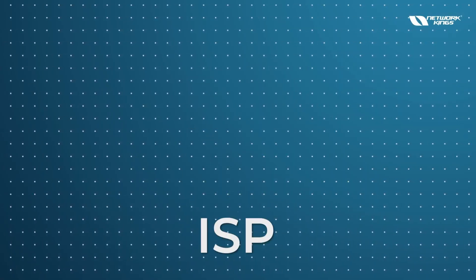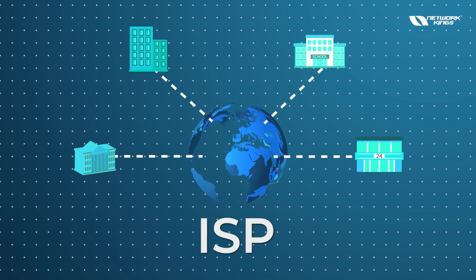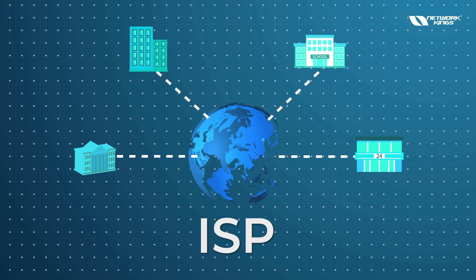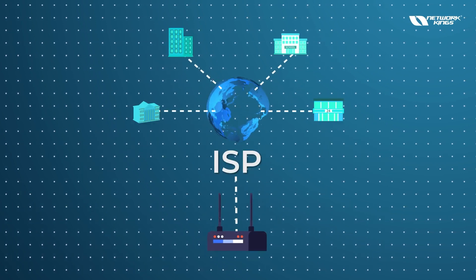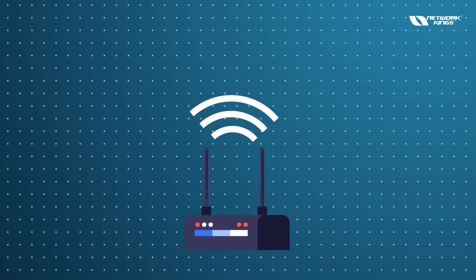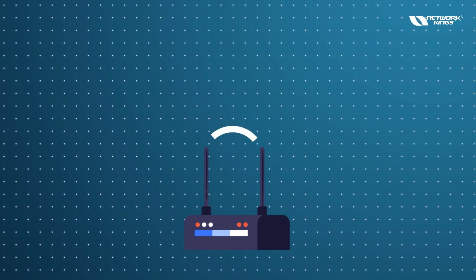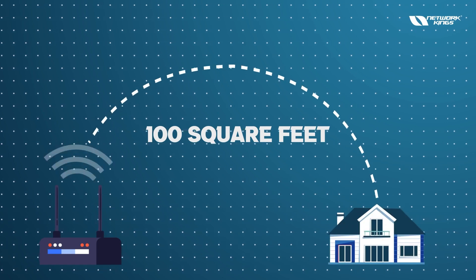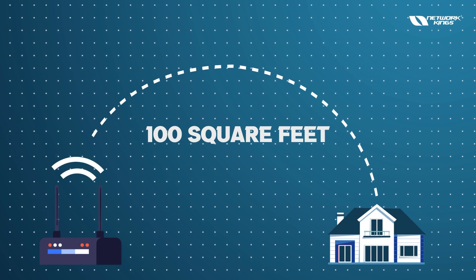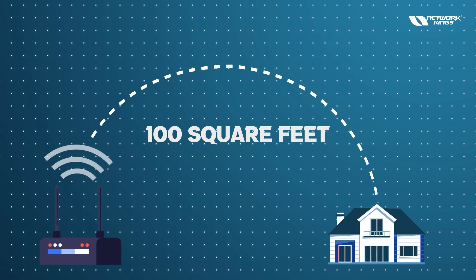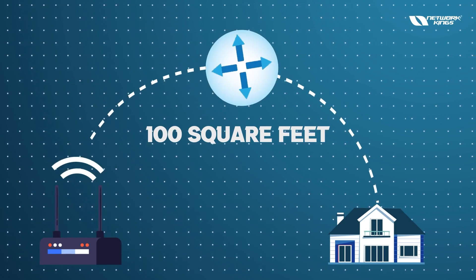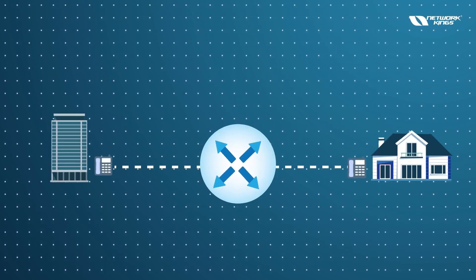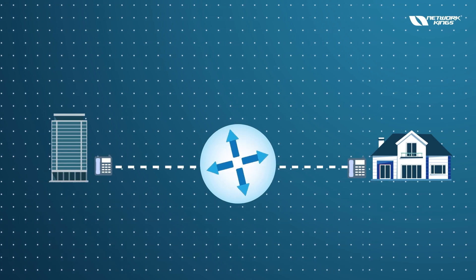ISP stands for Internet Service Provider, which gives you connectivity. You have a device called ADSL which has Wi-Fi but a limited range — it only goes up to 100 square feet. If you want to send signals to another part of the room, you can place a Wi-Fi router here to extend the range.